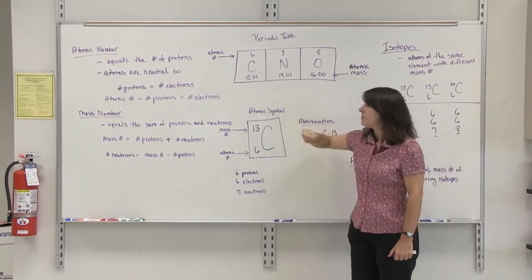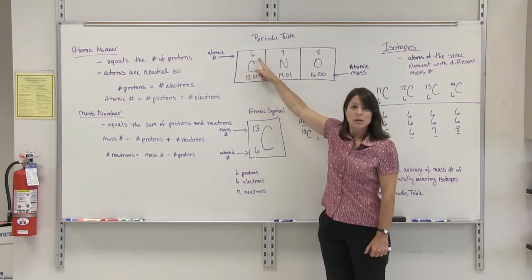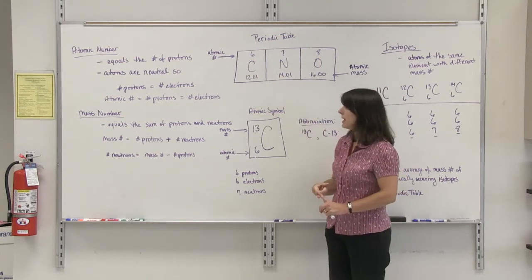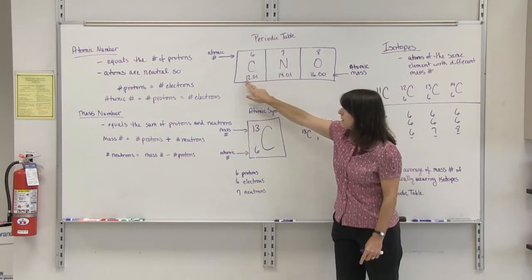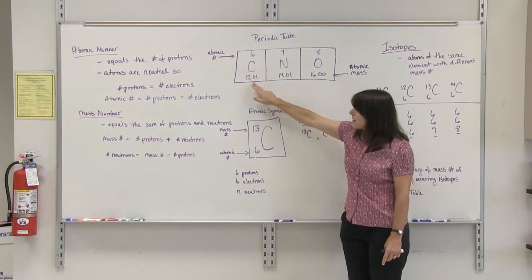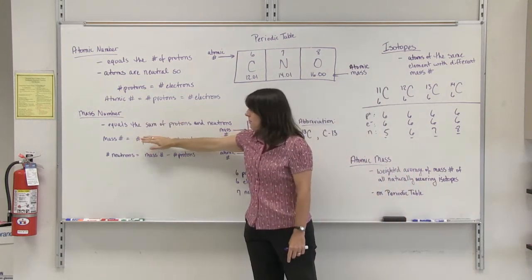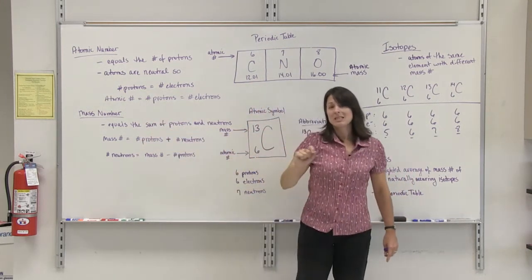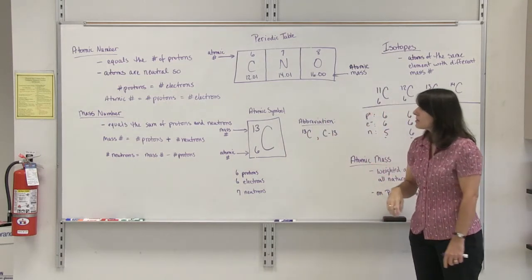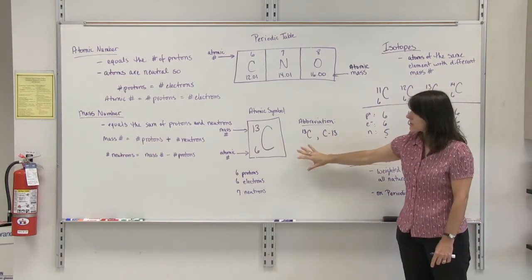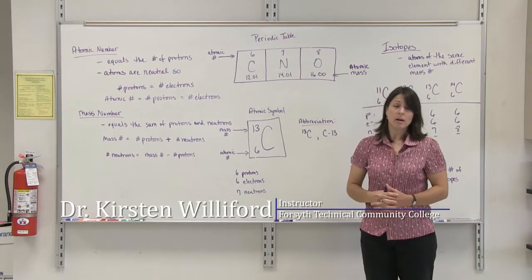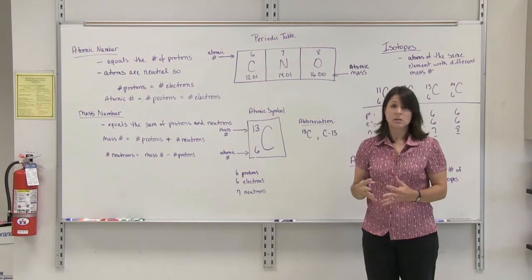So just a quick review: on the periodic table, you will find the atomic number, which represents the number of protons and the number of electrons in an atom. On the periodic table, you'll also find the atomic mass, which is the weighted average. The mass number represents the number of protons and neutrons in an atom. With those different numbers, you can identify or differentiate between atoms of the same element and atoms of different elements.